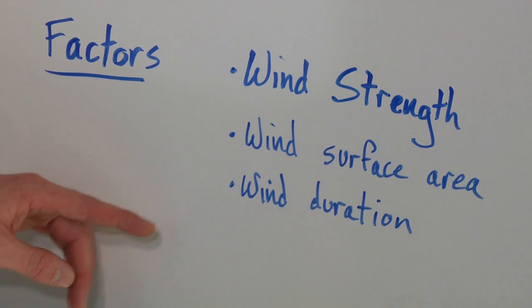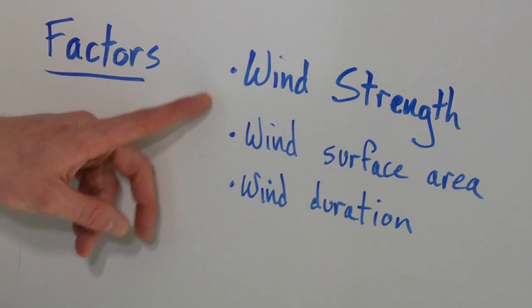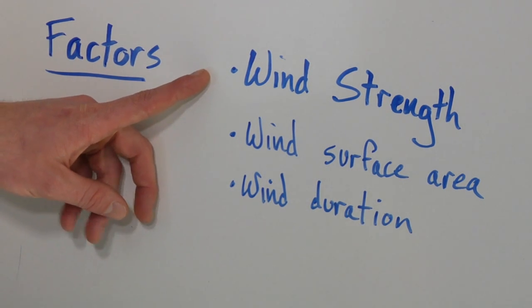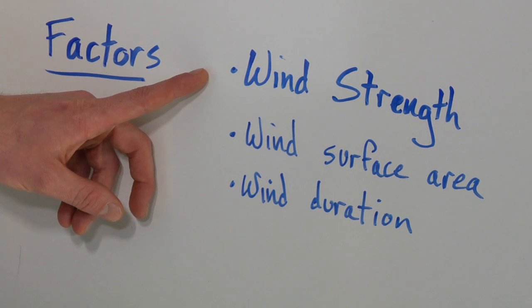So the three main factors affecting waves and wave size are the wind strength. So a stronger wind is going to make larger waves. That's just because there's more energy to transfer over to the water at that friction point.